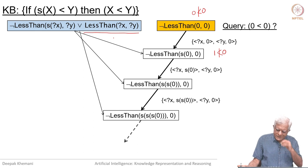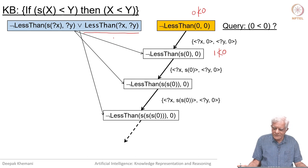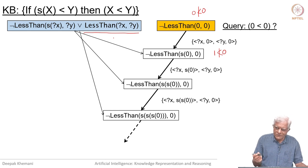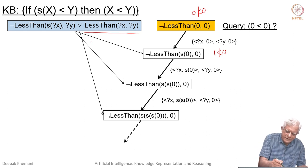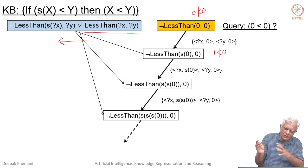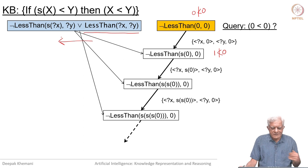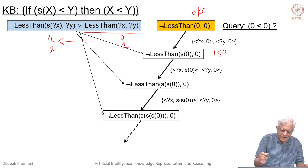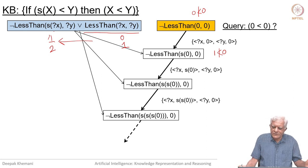You can see this is a never-ending process and we will never be able to show that 0 is less than 0. From the logic perspective, the proof is saying: 0 is less than 0 if 1 is less than 0, and 1 is less than 0 if 2 is less than 0, and 2 is less than 0 if 3 is less than 0. We are moving in a backward direction, from the goal to the antecedent. So it will keep backward chaining and never stop obviously.